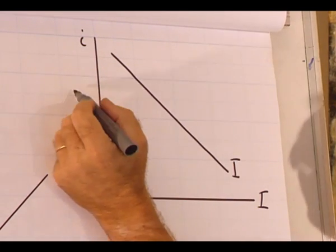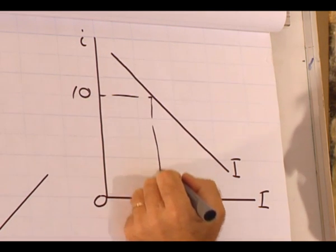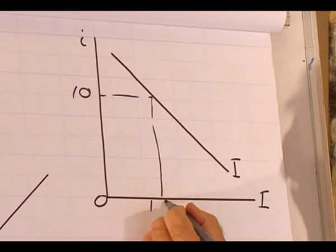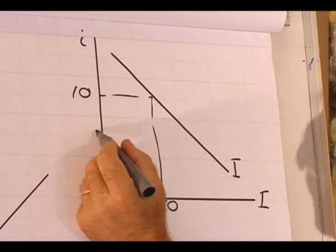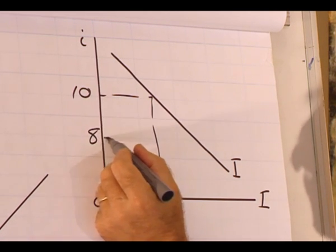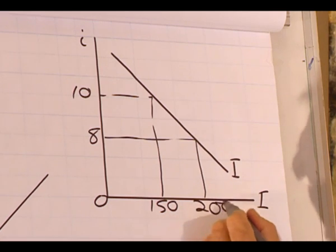In a previous example, at an interest rate of 10%, investment is 150, and at an interest rate of 8%, investment is equal to 200.